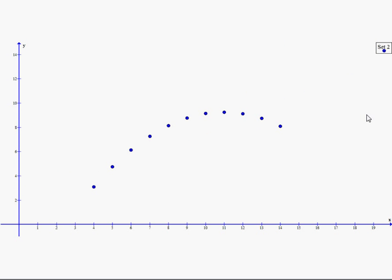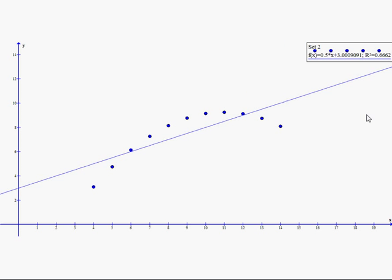Here's the second set of data, looks quite different, but we put a line of best fit through it, we get 0.5X plus 3.